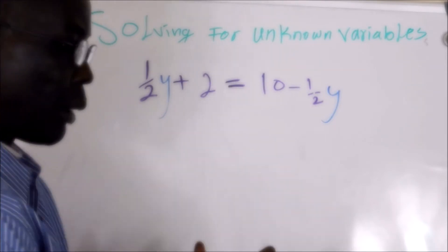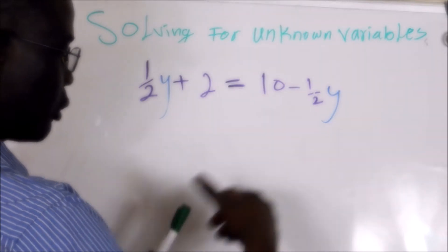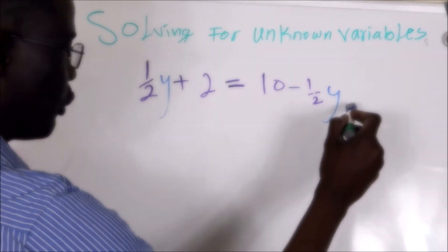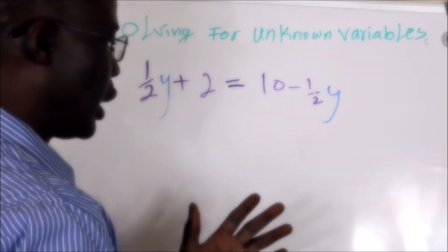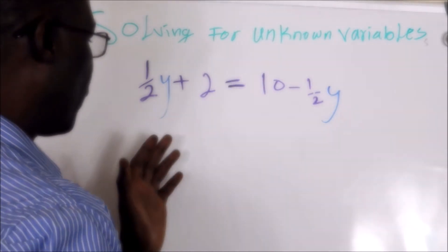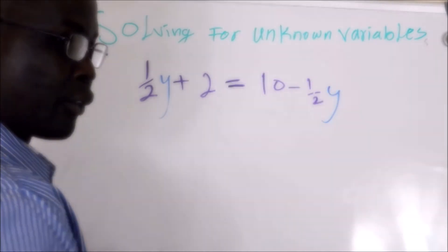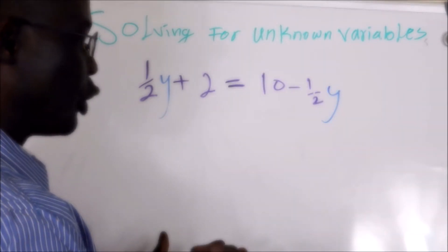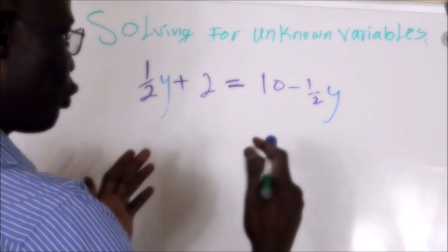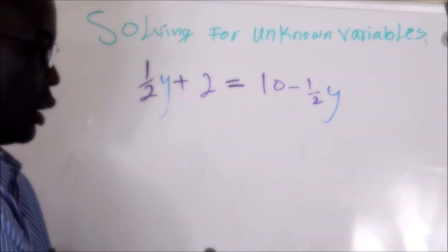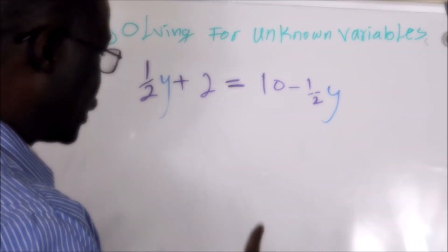To solve this type of problem, we have to put the numbers on the right side and then put Y on the left side, and then we divide to find the value of Y. You can solve the way you want, but it's a good idea to put the numbers on the right side and the variable on the left side. So let's do it.